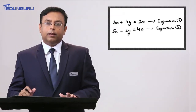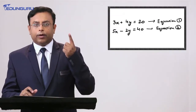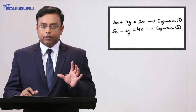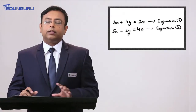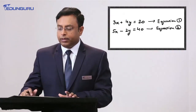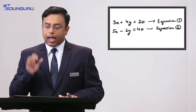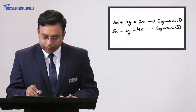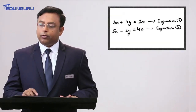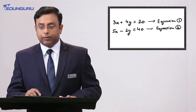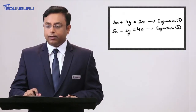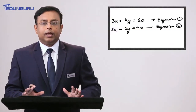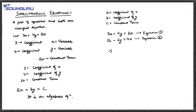You might say: can't we get the values of x and y with just one equation? Let me ask this as a question. Farooq, the question for you: can we solve only the first equation — 3x plus 4y is equal to 20 — and get the value of x and y? What do you feel? No, sir. OK, so according to you the equation cannot be solved. Fine.